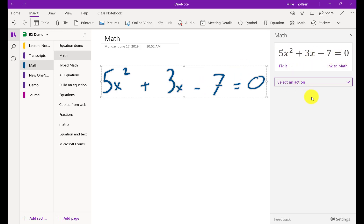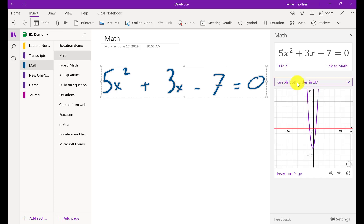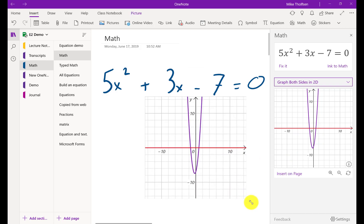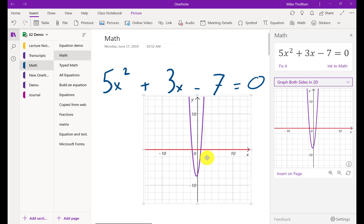Now I can also type my math out and the exact same thing happens. If I select action, I'm going to choose graph both sides in 2D and you can see it automatically has a graph that I can explore by just hovering my mouse over and I can choose to insert that right on the page. I can make it bigger, smaller, I can size it so really nice for graphing.